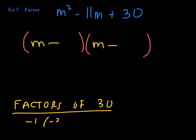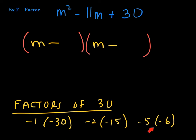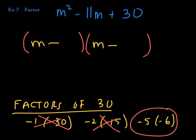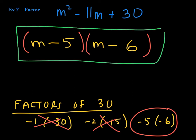Both factors are negative. Negative 1 times negative 30 doesn't add up to negative 11. Negative 2 times negative 15 doesn't either. Negative 5 times negative 6 — do those add up to negative 11? Yes! Those are the correct factors. So one slot gets negative 5 and the other gets negative 6: negative 5 times negative 6 is positive 30, and negative 5 plus negative 6 is negative 11. Distribute to check and you'll get the original polynomial back.